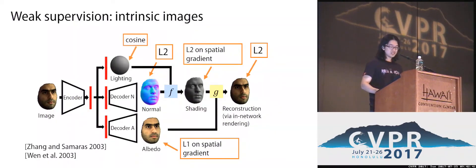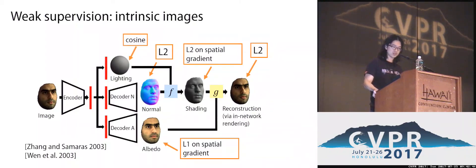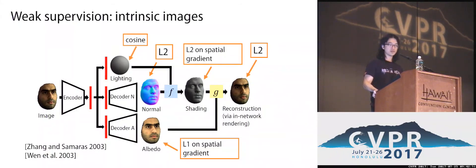In addition, to ease the training process, we also provide guiding signals to the lighting coefficients. We pre-compute lighting parameter estimations from the morphable models and use cosine similarity as the loss.